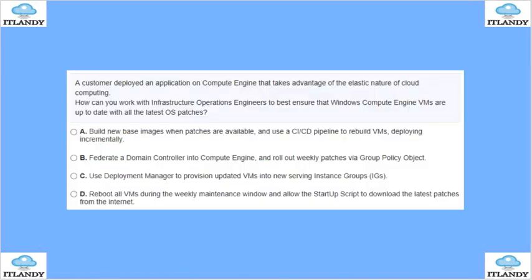Next, a customer deployed an application onto Compute Engine that takes advantage of the elastic nature of the cloud. How can you best ensure that the Windows Compute Engine VMs are up to date? Options include building a new base image via a CI/CD pipeline, federating the domain, using Deployment Manager to provision updated VMs into a new service group, or rebooting all VMs during the weekly maintenance window to allow them to get updates. The answer is D — when they get rebooted on a weekly basis, they receive the updates.